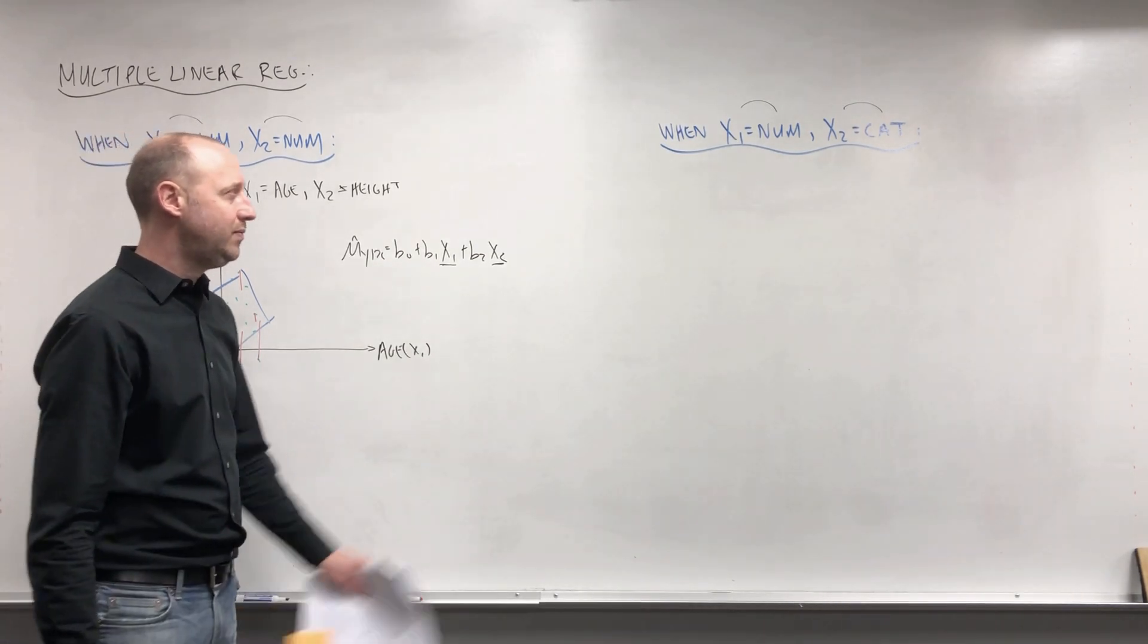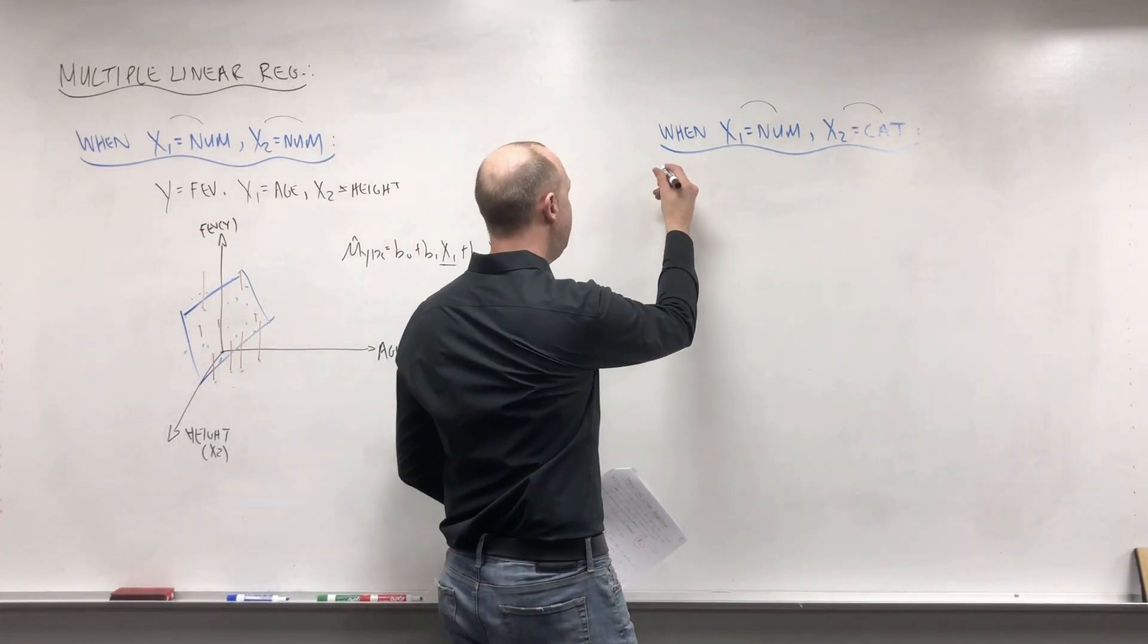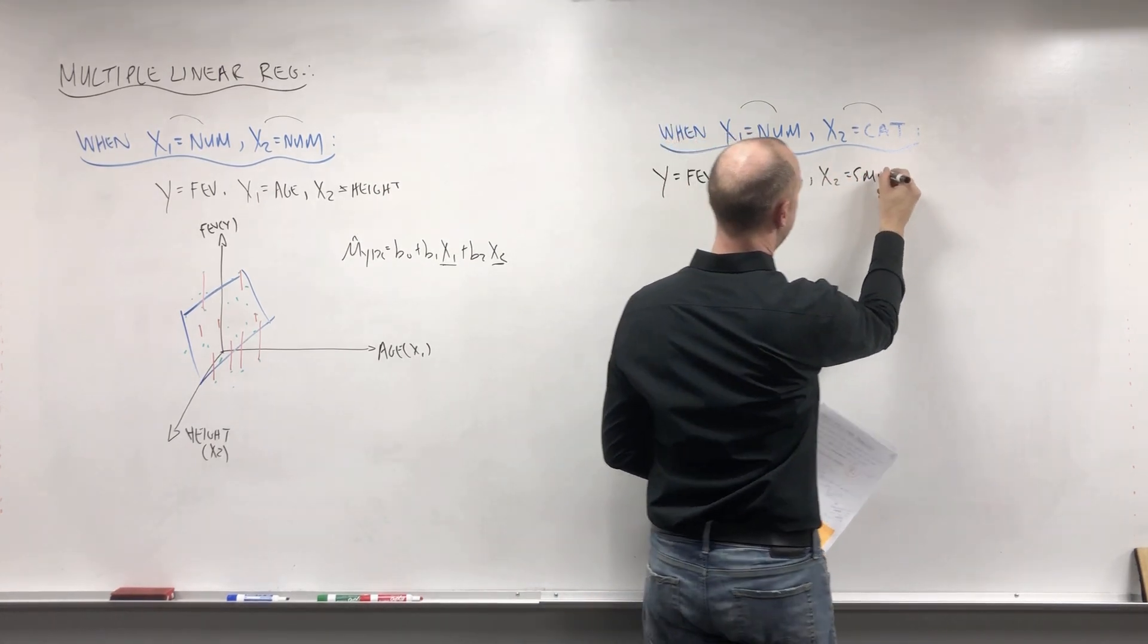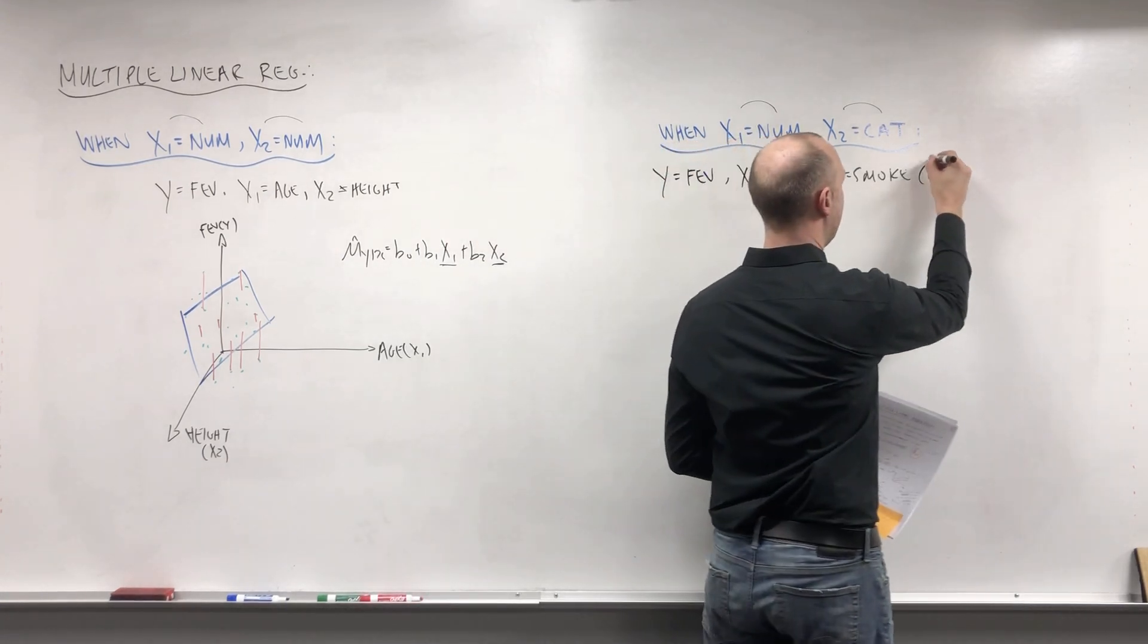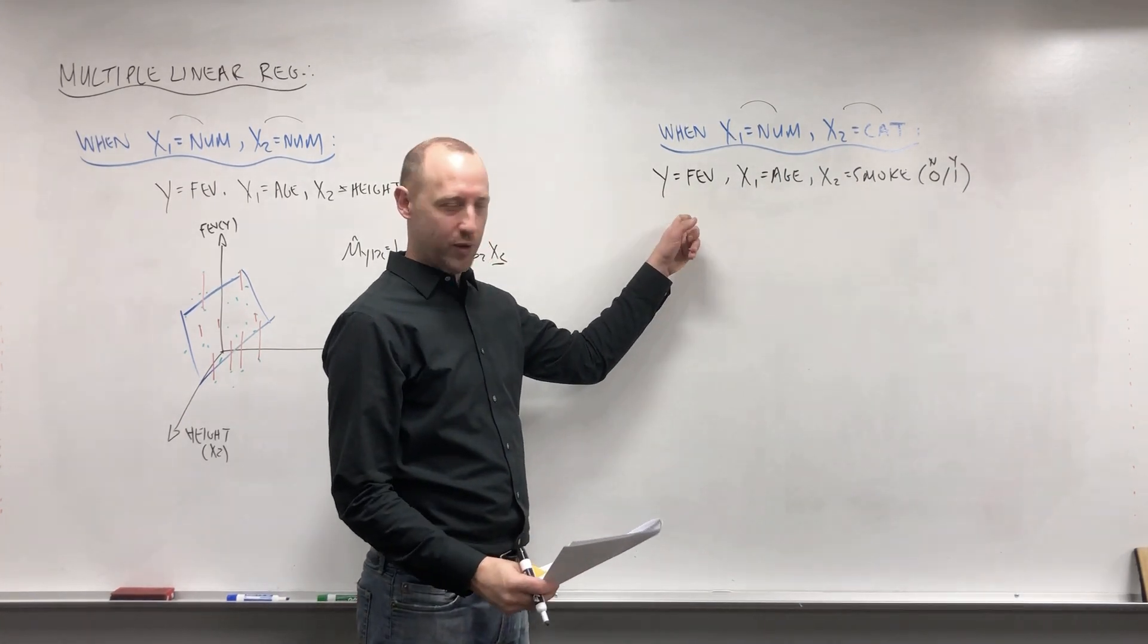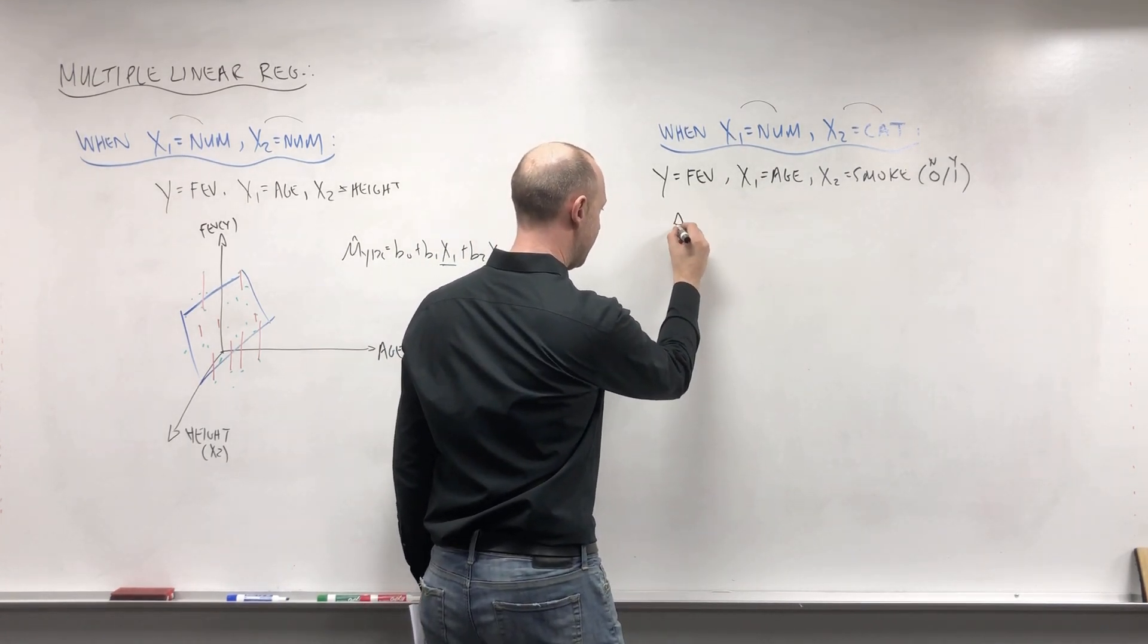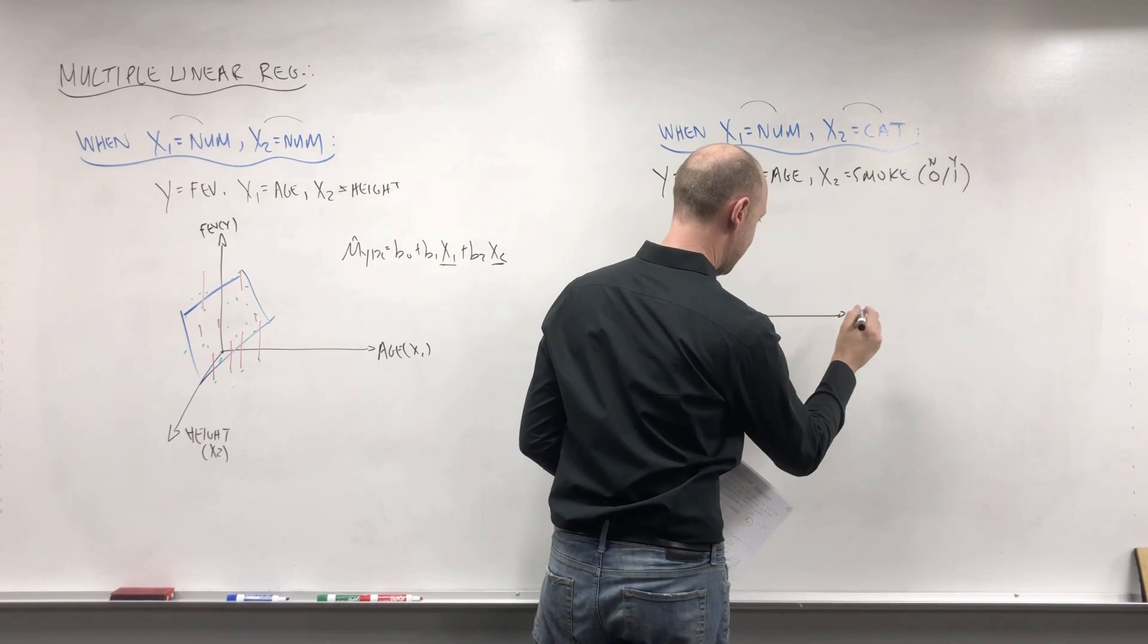Now what I want to talk a little bit about is what does the model look like when we have one numeric and one categorical variable. And so here using the same data, looking at FEV as the outcome and x1 being the age and x2 being if the child smokes, no or yes, zero or one, or no or yes. Now again in the separate video working with R we'll look at how to visualize this sort of data. I'm going to talk about it here for now. There's two ways we can think of fitting a model to this, and I'll expand on the difference between these two as we progress through the next few weeks.